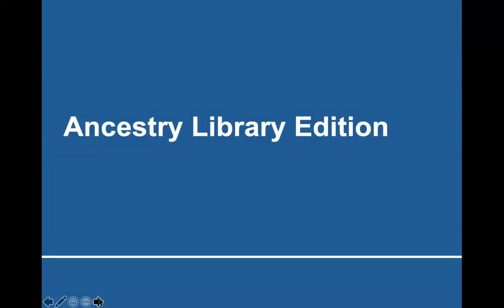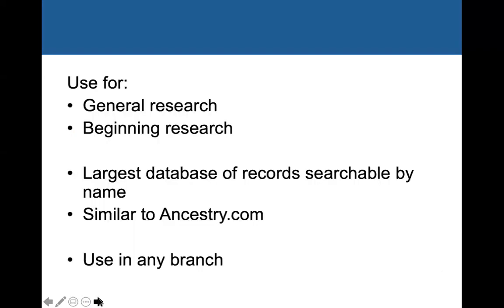The first database we're going to look at today is Ancestry Library Edition. It's great for general research and beginning research. It is the largest database of records searchable by name, similar to the Ancestry.com that you would have to have a subscription for and pay for, and you can use it in any of the library's branches.